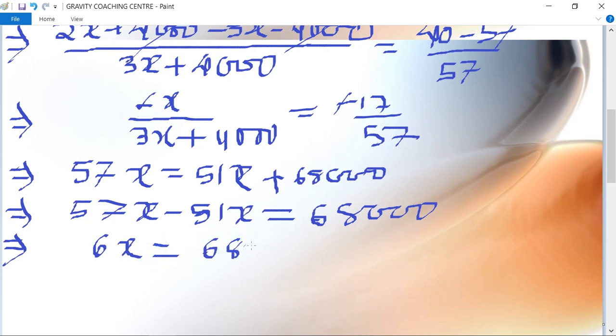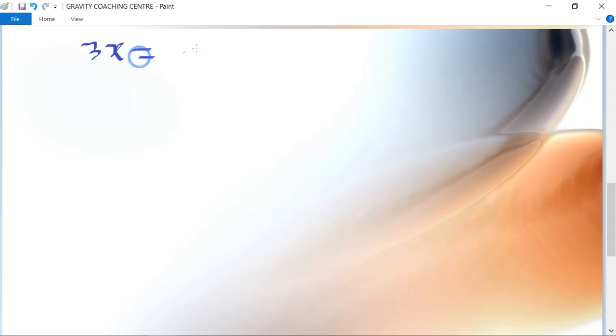Therefore, 3x equals 68,000 upon 2, which equals 34,000.